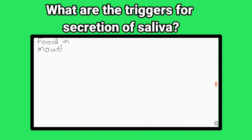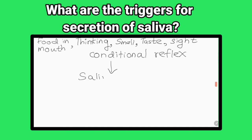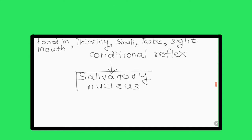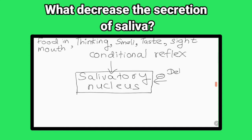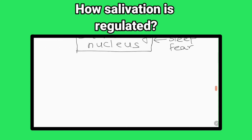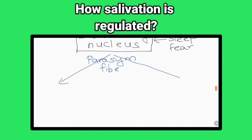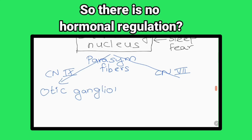What are the triggers for secretion of saliva? Reflexes that are stimulated by the physical act of chewing, thinking, seeing, or smelling food. What decreases the secretion of saliva? Dehydration, sleep, and fear. How is salivation regulated? Salivary secretion is almost entirely controlled by neural influences; the parasympathetic nervous system plays the most important role, so there is no significant hormonal regulation.